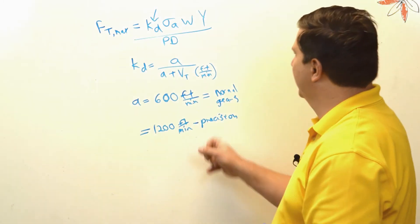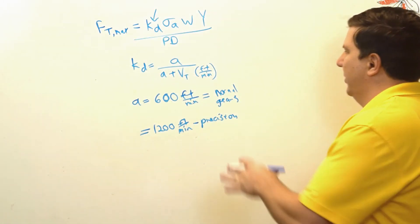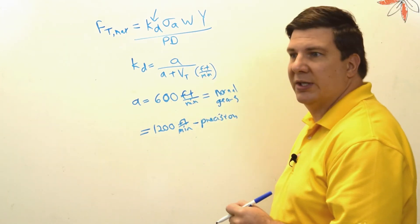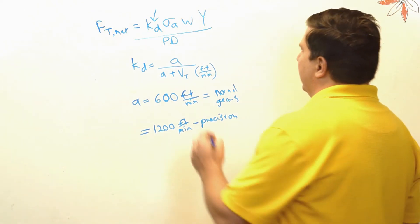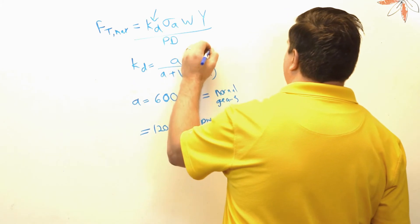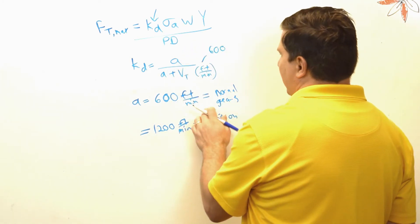So let's just assume that our velocity is also 600 feet per minute. So that's going to give us a kd. So if I assume that's 600 and just say I'm using a normal gear here.